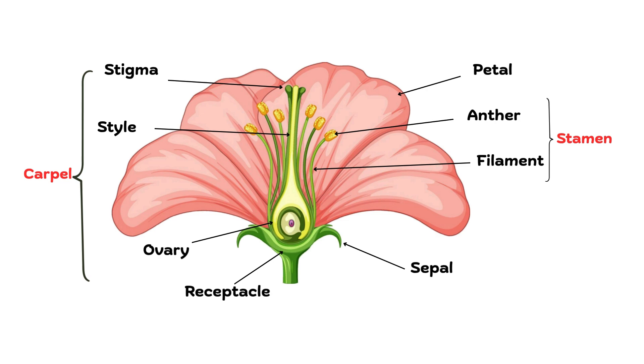A flower is the reproductive part of a plant. It helps in making seeds so that new plants can grow. Let's break it down into its main parts.